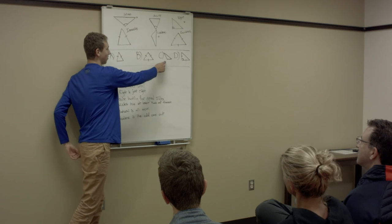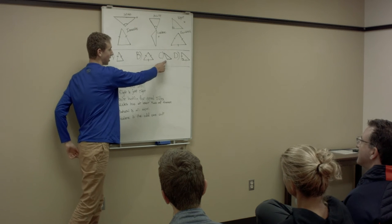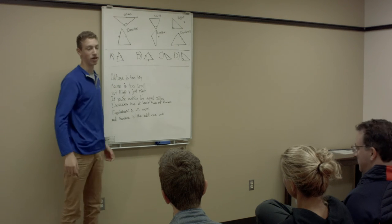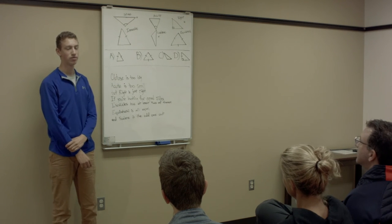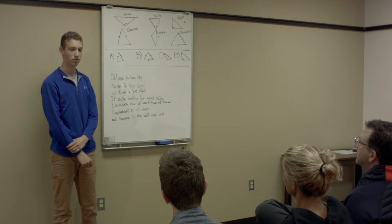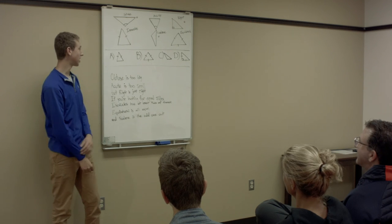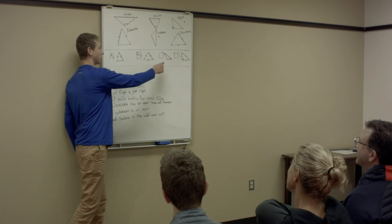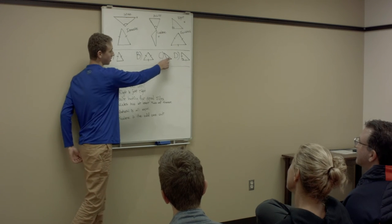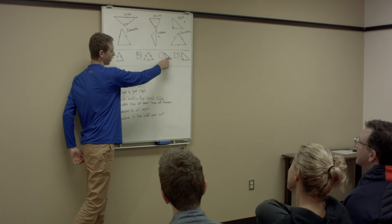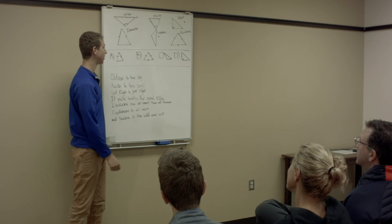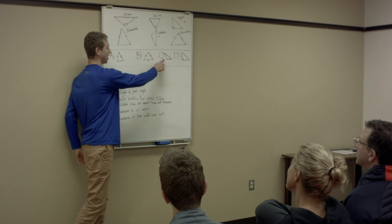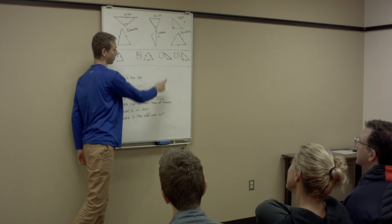Now let's go to problem C. Jack, what do you think this triangle might be? I think it's obtuse and scalene. Nice job, that's exactly right. It's obtuse because this angle is greater than 90 degrees, and it's scalene because each side is a different length.